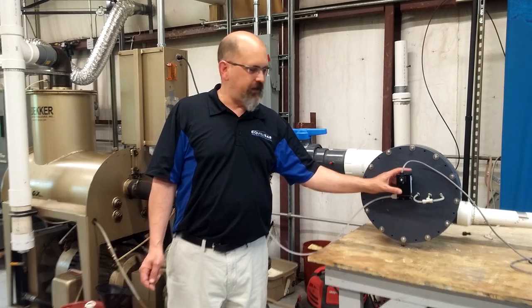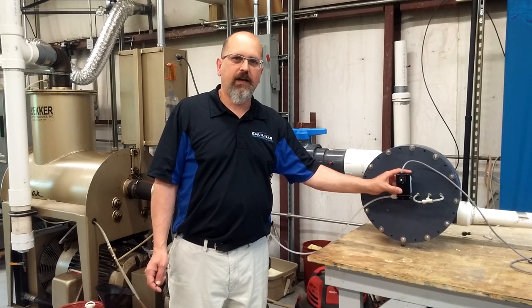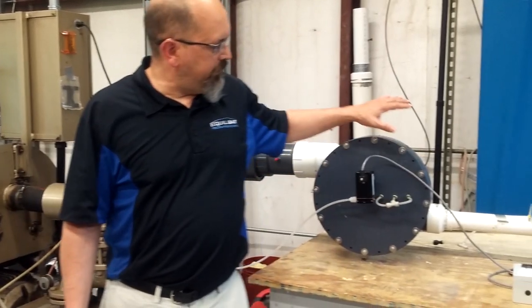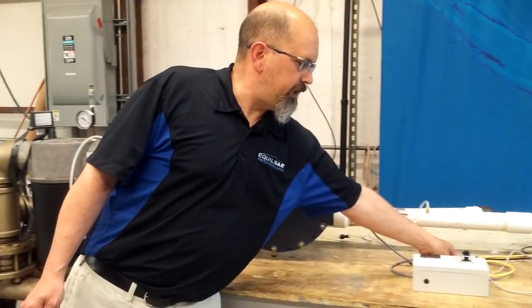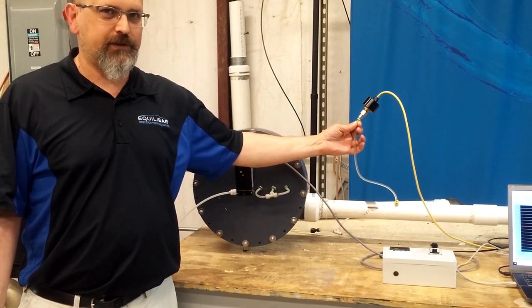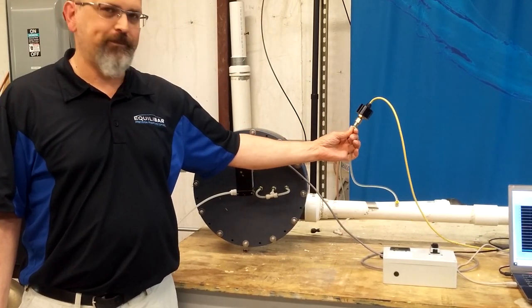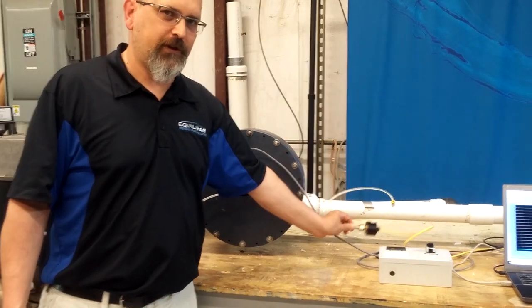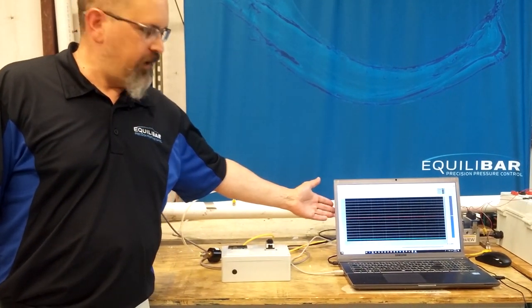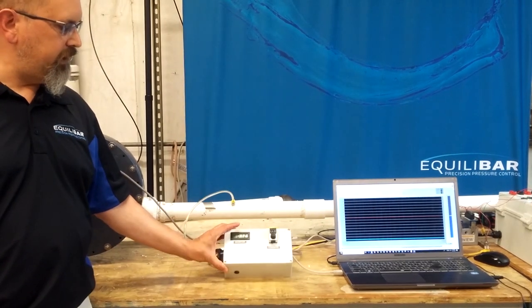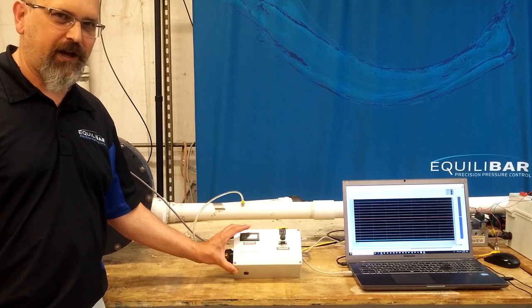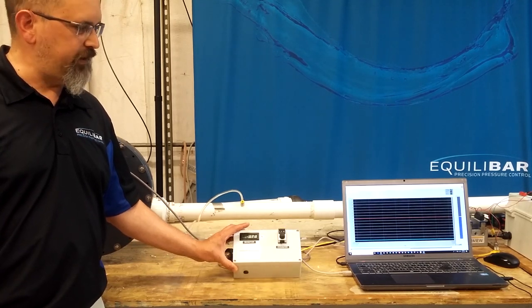Pilot operating that regulator is a QPV electronic vacuum regulator. The vacuum regulator is controlling the vacuum here, and we can see what that vacuum level is with this vacuum transducer. The vacuum transducer is going to display on this chart recorder. We're going to use this to establish the set point for the electronic vacuum regulator that's pilot operating the main vacuum regulator.